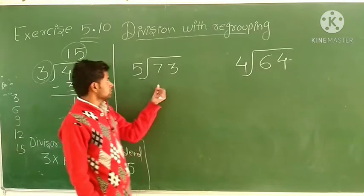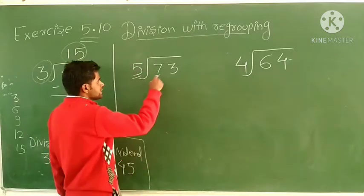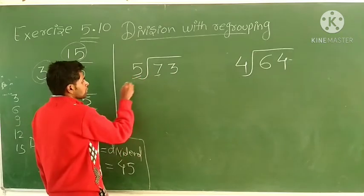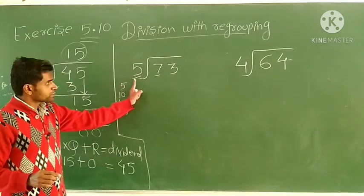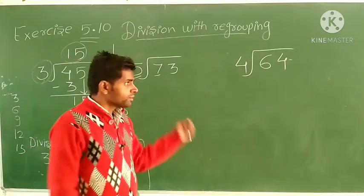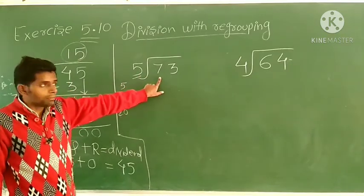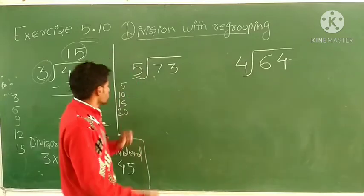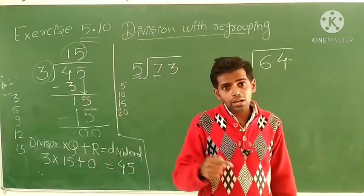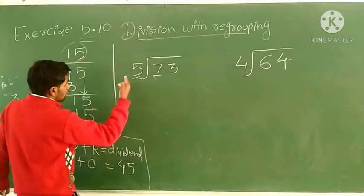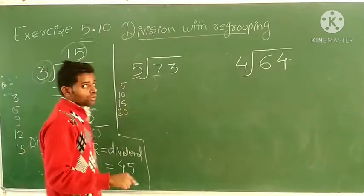The next question: we have to divide 73 by 5. Since 5 is a one-digit number, we take single digits one at a time. The table of 5 up to 7: 5 ones are 5, 5 twos are 10. We cannot write 10 because 10 is greater than 7. So we take a number less than 7 that is in the table of 5.